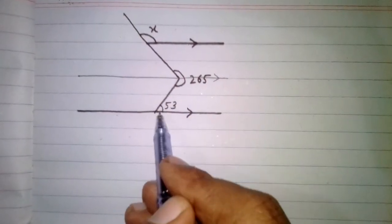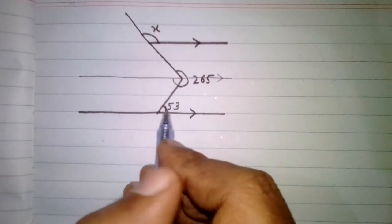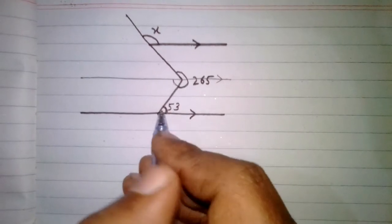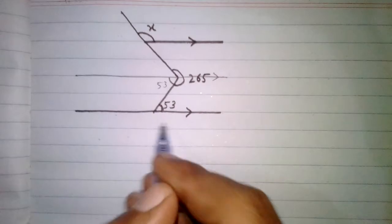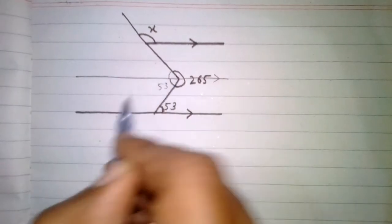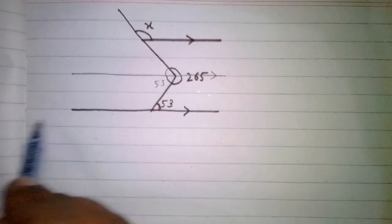this angle is equal to this angle and they are called alternate angles. So this angle is 53. Now we will find this angle and we know that the sum of angles about a point is